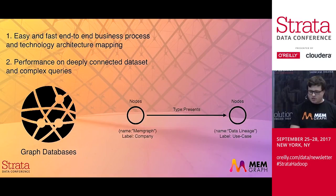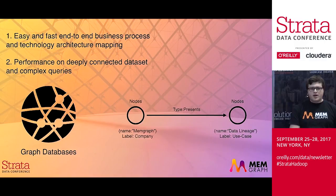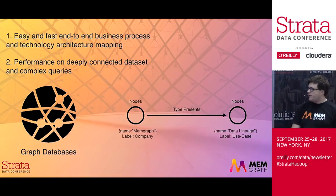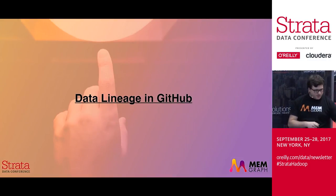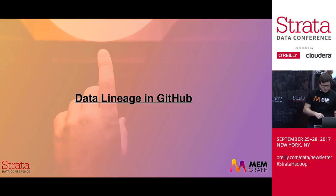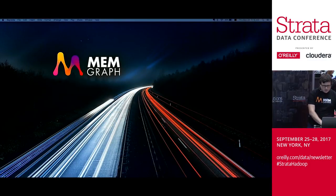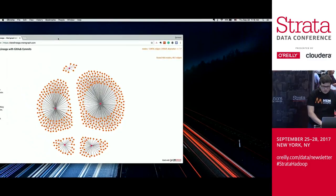Ideally you want easy and fast end-to-end business process and technology architecture mapping, which is very suitable with graphs. Performance on deeply connected datasets and hopless queries is basically where graph databases shine. For those who don't know what graph databases are, they help you manage and store network data — connected data. You have nodes and relationships between your nodes instead of traditional tables. And when you map your system into data lineage, this becomes very powerful.